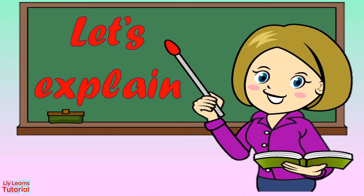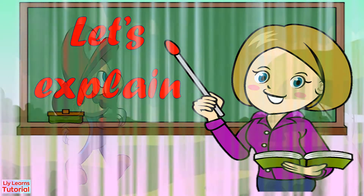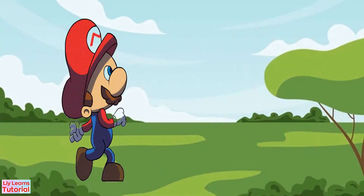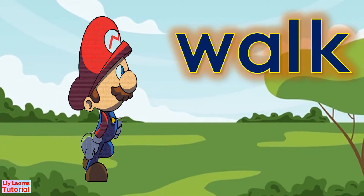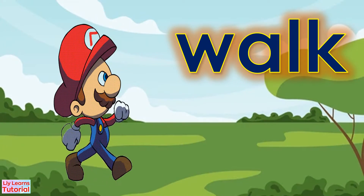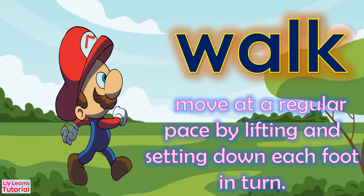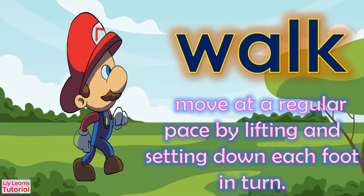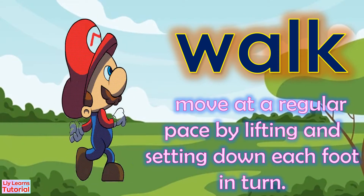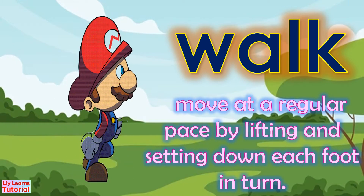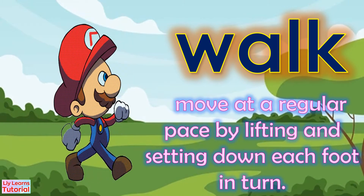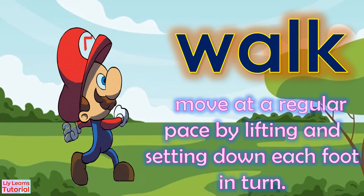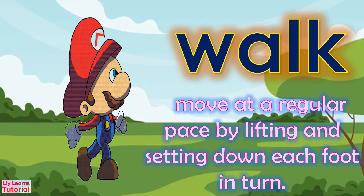Let's explain these human movements in more detail. Humans walk. It means to move at a regular pace by lifting and setting down each foot in turn, never having both feet off the ground at once.